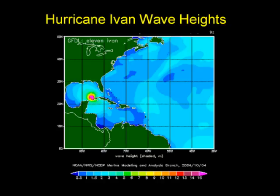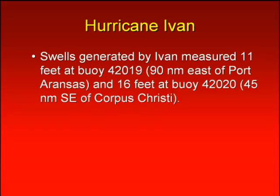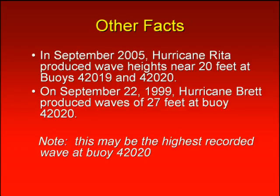Here's a simulation from Hurricane Ivan, illustrating the waves propagating away from the storm and into the Northwest Gulf. Swells generated by Ivan measured 11 feet and 16 feet respectively along the Texas coast from the NOAA buoys. In September of 2005, Hurricane Rita produced wave heights near 20 feet at our Texas coastal buoys. And on September 22nd of 1999, Hurricane Brett produced significant wave heights of 27 feet at our nearshore buoys. This may be the highest record from a NOAA buoy in the Northwest Gulf since we've been keeping records.